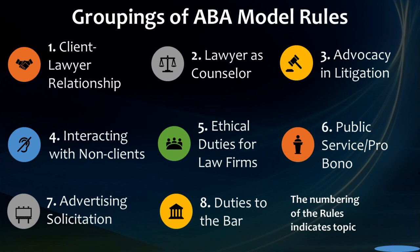When you start going through the Model Rules, you're going to find that they're numbered and the numbers correlate to groupings that are topical. So all the rules that start with one — like 1.3, 1.7, 1.18 — relate to the client-lawyer relationship. This will cover things like confidentiality, conflicts of interest, and fee arrangements. In contrast, the rules that start with three are specifically about litigation and practice before a court. So the numbering of the rules kind of indicates the topic.